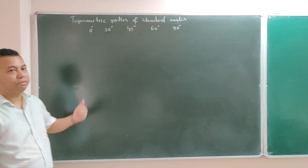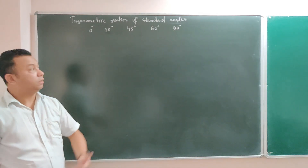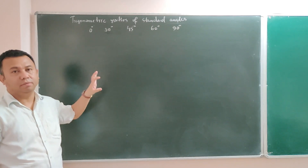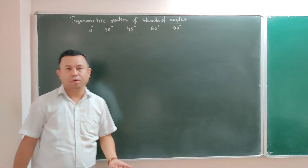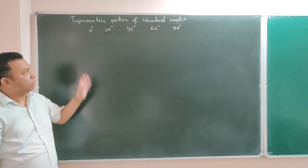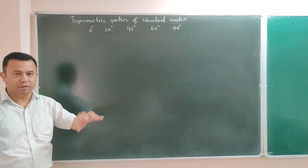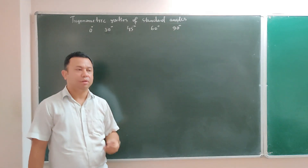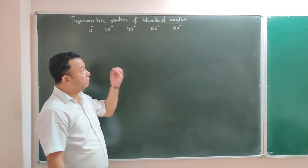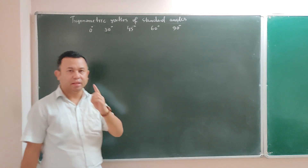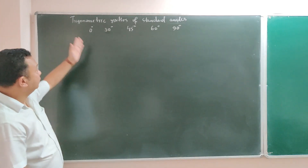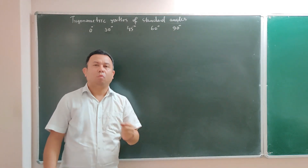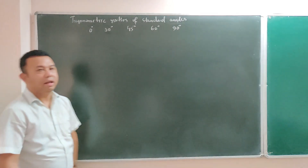Initially we will start with writing. I will give you the trick to write this table and how to memorize the values. Even if you cannot memorize, in the exam you can create this table and write it on your answer script, and from this table only you can pick up the values. Our whole chapter is about writing the values for these standard angles. The five standard angles are 0°, 30°, 45°, 60°, and 90°.